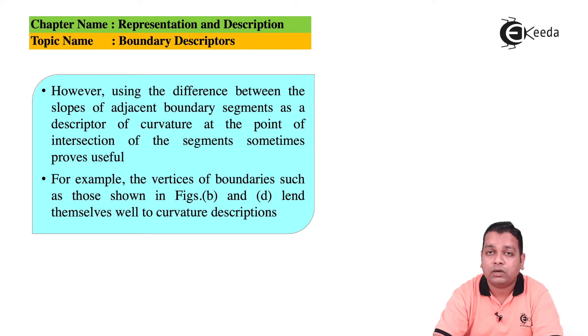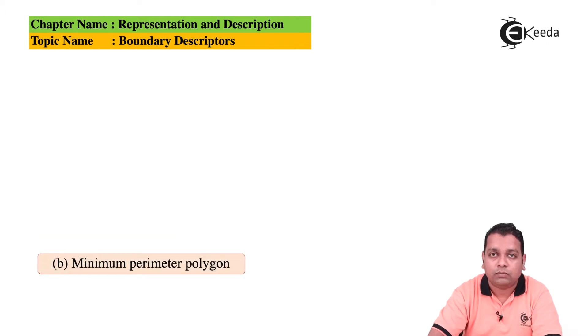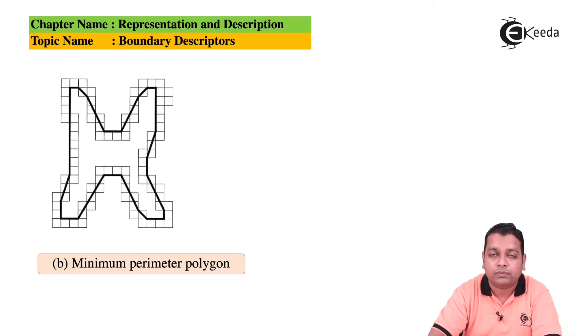For example, let us take the vertices of the boundaries such as those shown in figures B and D that we have already discussed with our initial topics of the chapter boundary following that lend themselves well to curvature descriptions. With the boundary following and then further we have the minimum perimeter polygon represented. The boundary was supposed to be one rubber band that was having the shrinking effect to show you the polygon with respect to the minimum perimeter, and this was the resulting polygon in another example.